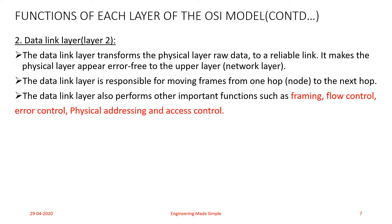Framing: the Data Link layer divides the stream of bits received from the Physical layer into a manageable data unit called frames. It groups the bits together and makes them into a frame by adding address and control information to the data.